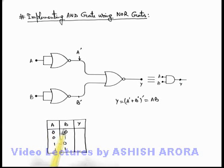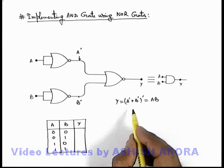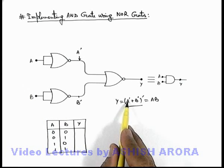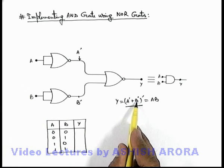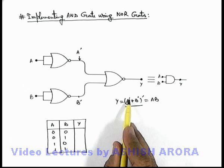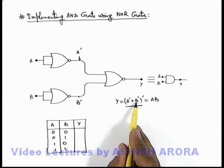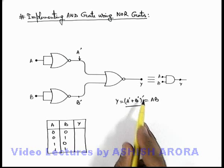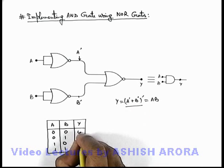Say if A and B are 0 and 0, then in this expression you can see it'll be 0 plus 0, and 0 prime plus 0 prime will be 1 plus 1, which is 1, and 1 prime will be 0, so the output will be 0 here.